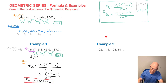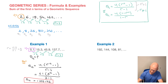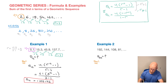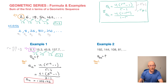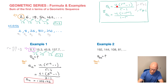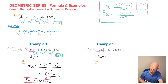Now let's move on to example 2. Again we're given a geometric sequence, and we're asked to find the sum of the first 20 terms, S sub 20. Just as in the first example, the only things we need are the sequence's first term and its common ratio. The first term is u sub 1, which equals 192.